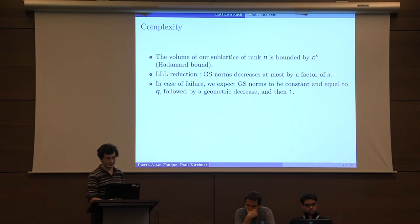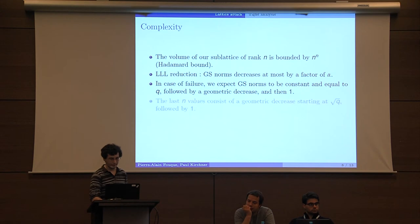Due to LLL reduction, we know that Gram-Schmidt norms decrease at most by a constant factor. In case of failure, we expect Gram-Schmidt norms to be constant and equal to Q followed by a geometric decrease and then 1.